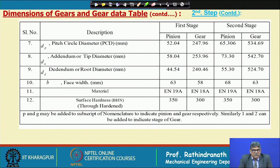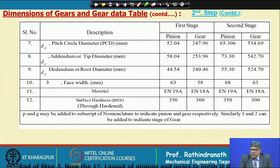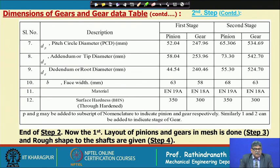Regarding helix hand: first-stage pinion is right-hand, gear is left-hand; second-stage pinion is left-hand — meaning both the gear and pinion on the intermediate shaft have the same helix direction, which is important and will be discussed in later lectures. The face width of the pinion is taken 5 mm more than the gear; the gear width is exactly the calculated active contact width. Surface hardness: pinion 350 BHN, gear 300 BHN, for both stages. This concludes Step 2, and the next step will be to make a layout of the gears and pinions to determine the shaft shapes before proceeding with further calculations.